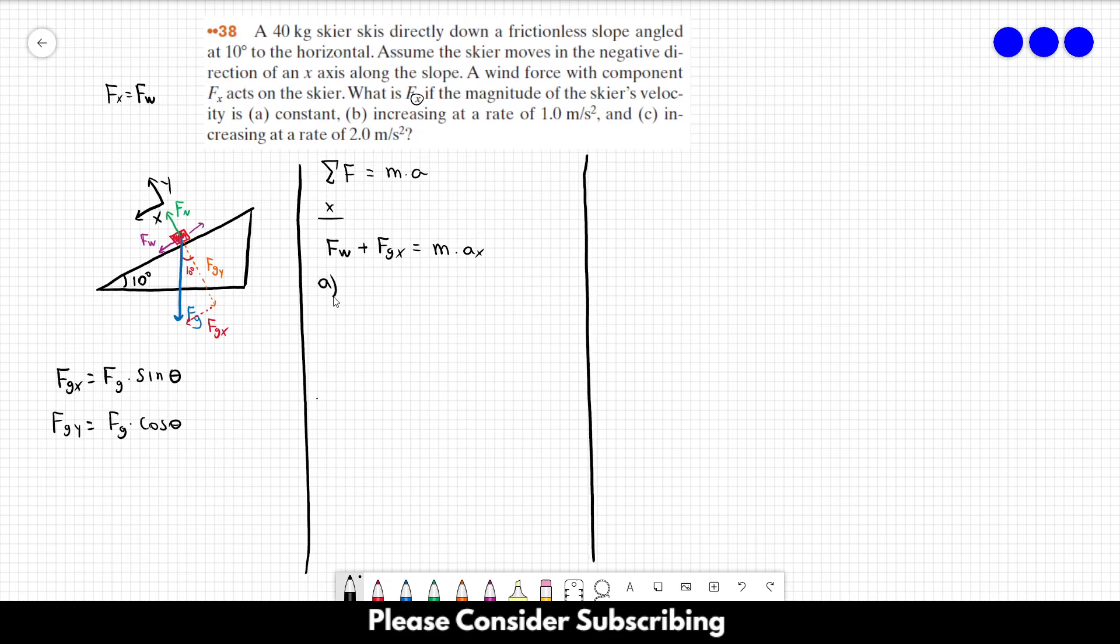So for letter A, the velocity is constant, so the acceleration is zero. So we know that Fw or Fx plus Fgx is equal to zero. So Fw, the force of the wind, would be minus Fg times the sine of the angle. And we know that Fg is equal to mass times the acceleration of gravity times the sine of the angle. So in this case, let's replace the letters by the numbers. The mass is 40, the gravity is 9.8 times the sine of 10 degrees. So if you do this calculation over here, you would find minus 68 newtons. This minus sign here tells us that this force points upwards, because upwards is the negative x direction. That's the answer of letter A.